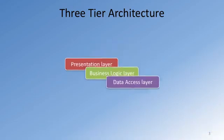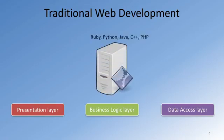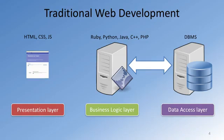In traditional web development, the business logic layer is usually implemented using technologies like Ruby, Python, PHP, Java, C++, or ASP.NET. This layer interacts behind the scenes with persistent data typically stored in a relational database. It is also concerned with rendering information to the front-end, typically through server-side rendering, where HTML, CSS, and JavaScript is generated on the server-side and then sent over to the client-side as a web page.